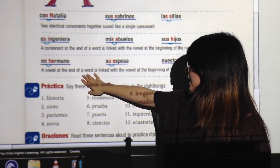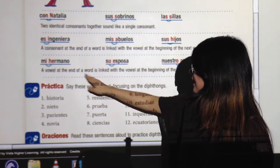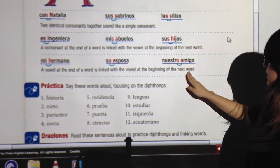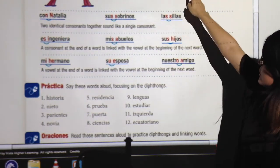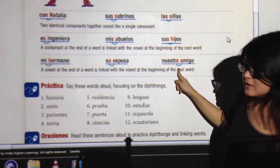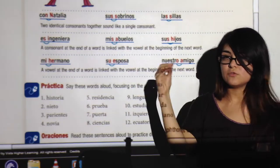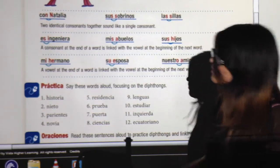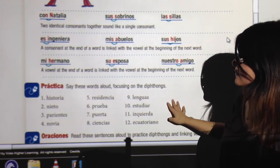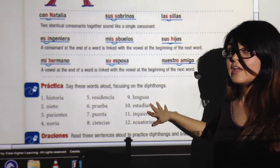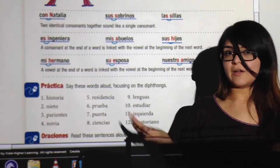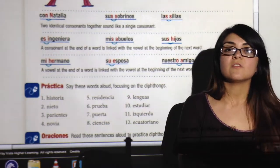A vowel at the end of a word is linked with the vowel at the beginning of the next word. All right? So it's the same as in there. It doesn't matter if it's the same one or if it's different. If you have two vowels, you will link them. All right? So now, go there and try to practice pronunciation. But let's move to the other topic.